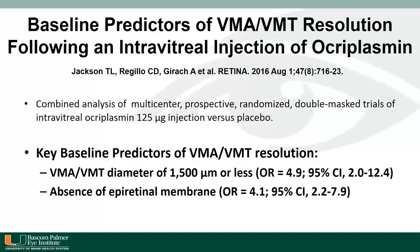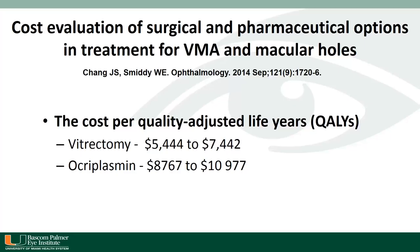In a combined multi-center study, Jackson and co-authors reported in Retina 2016 the predictors of VMA/VMT resolution following ocriplasmin. The key predictors for resolution were VMA or VMT diameter of 1,500 microns or less and the absence of an epiretinal membrane. Regarding costs, Drs. Chang and Smitty evaluated costs for treatment with ocriplasmin compared to standard vitrectomy. The cost per quality-adjusted life years was $5,000 to $7,000 for vitrectomy, whereas ocriplasmin was more expensive at $8,000 to $10,000.